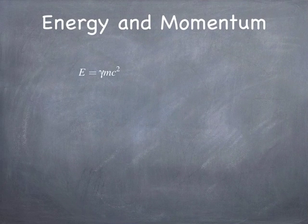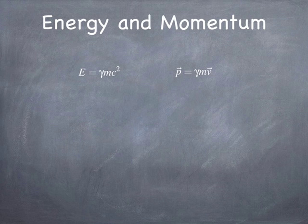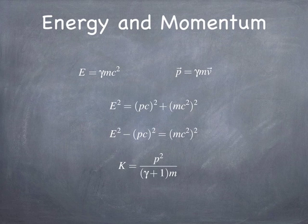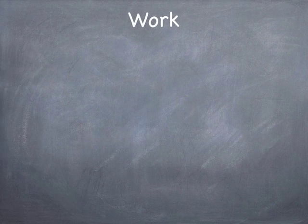If you want to relate energy and momentum: the energy is gamma mc squared, and the momentum is gamma times mv. Momentum times c squared plus the rest energy squared equals the total energy squared. You can also find a new way to compute the kinetic energy, which is the squared momentum over (gamma plus 1) times the mass. In the low speed limit this reduces to p squared over 2m, but it's p squared over (gamma plus 1)m in general.